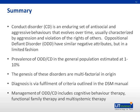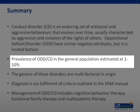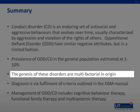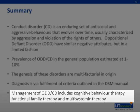In summary, Conduct Disorder is an enduring set of antisocial and aggressive behaviors that evolves over time, usually characterized by aggression and violation of the rights of others. Oppositional Defiant Disorder has similar negative attributes but in a limited fashion. The prevalence of ODD or CD in the general population is estimated at 1% to 10%. The genesis of these disorders is multifactorial in origin. Diagnosis is via fulfillment of criteria outlined in the DSM manual. Management includes cognitive behavior therapy, functional family therapy, and multisystemic therapy.